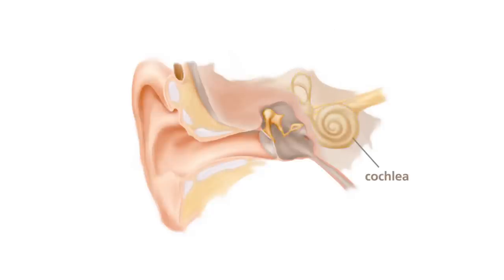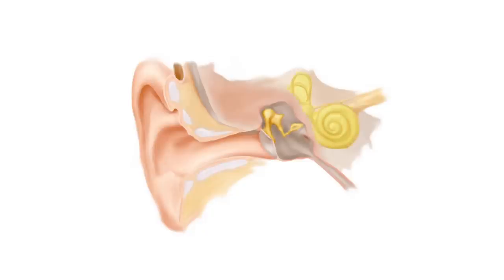The cochlea of the inner ear is a fluid-filled tube coiled like a snail shell and lined with thousands of tiny hair cells. Each movement of the middle ear bones creates a fluid wave, which causes the hairs to convert the motion to electrical energy that travels to the brain and is interpreted as sound.